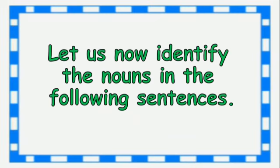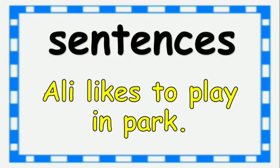Let us now identify the nouns in the following sentences. Example: Ali likes to play in the park. Here, Ali is a noun and park is a noun too. Ali is the name of a person, and park is a place.